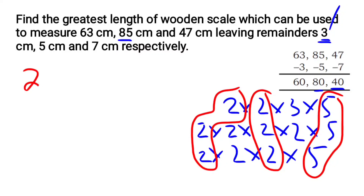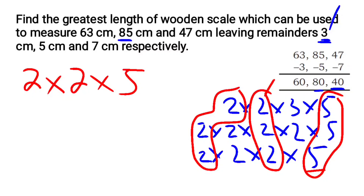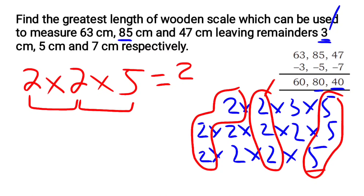The common factors are: 2 appears in all three, and 5 appears in all three. So we multiply them: 2 times 2 is 4, and 4 times 5 is 20. So the HCF is 20.